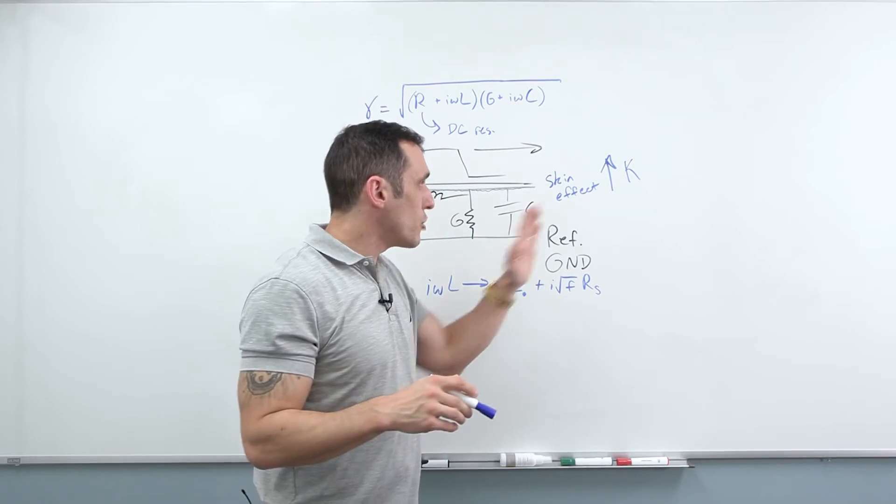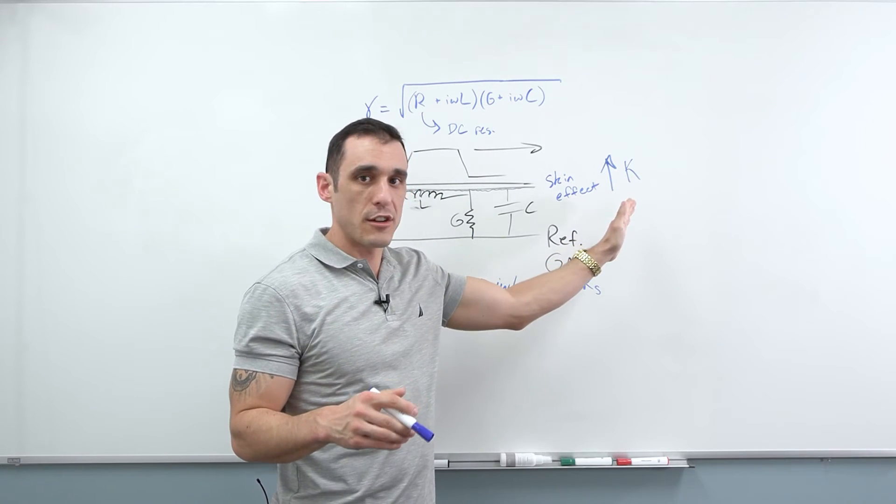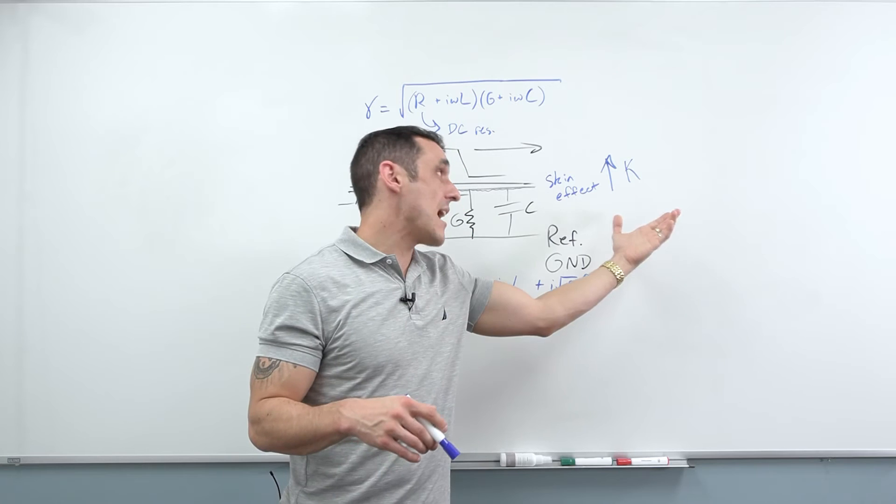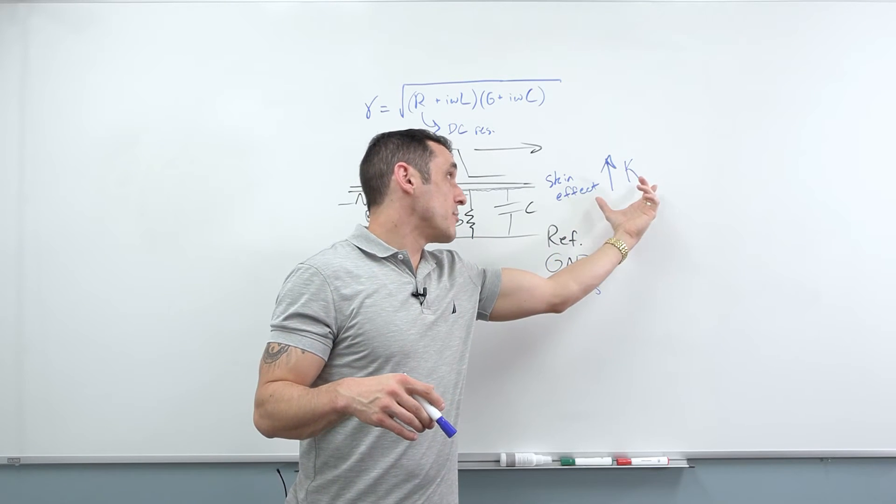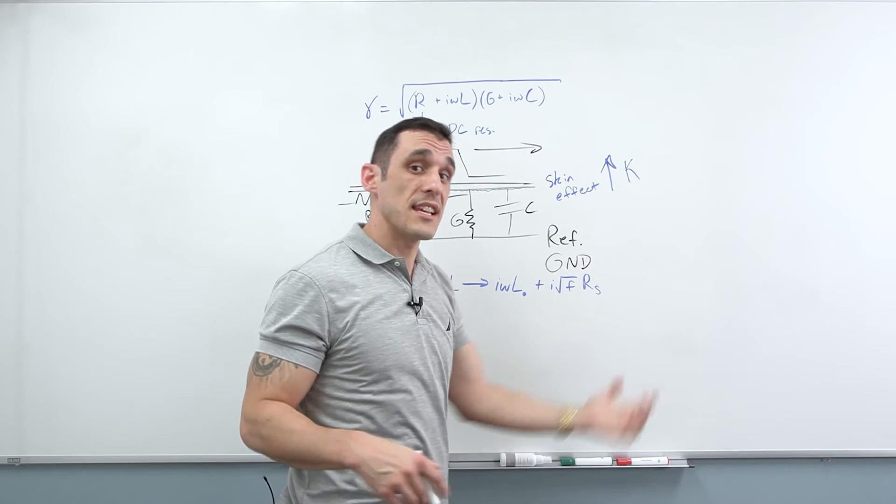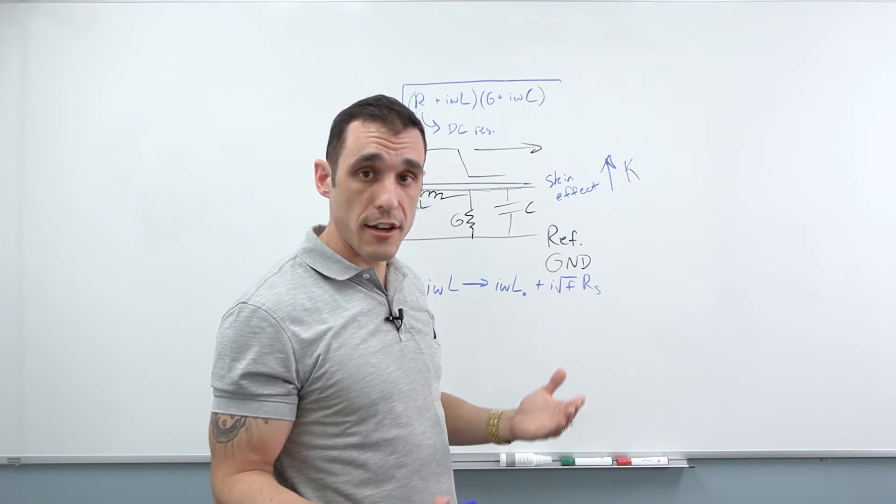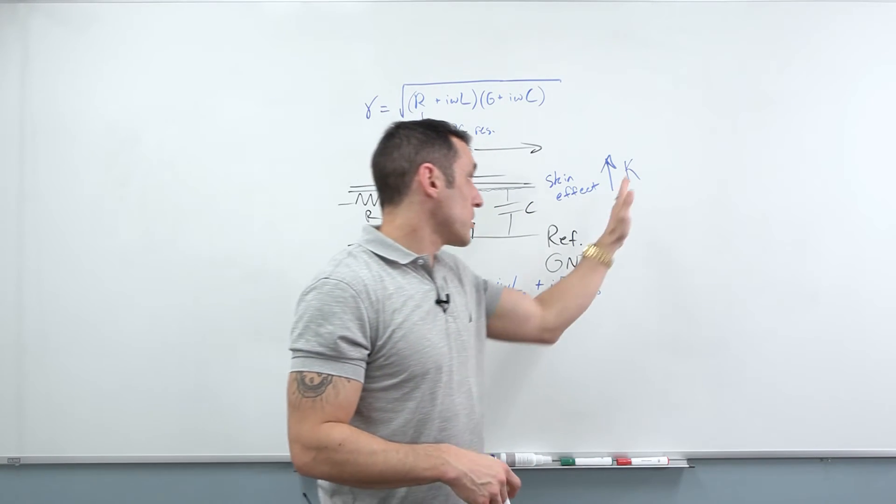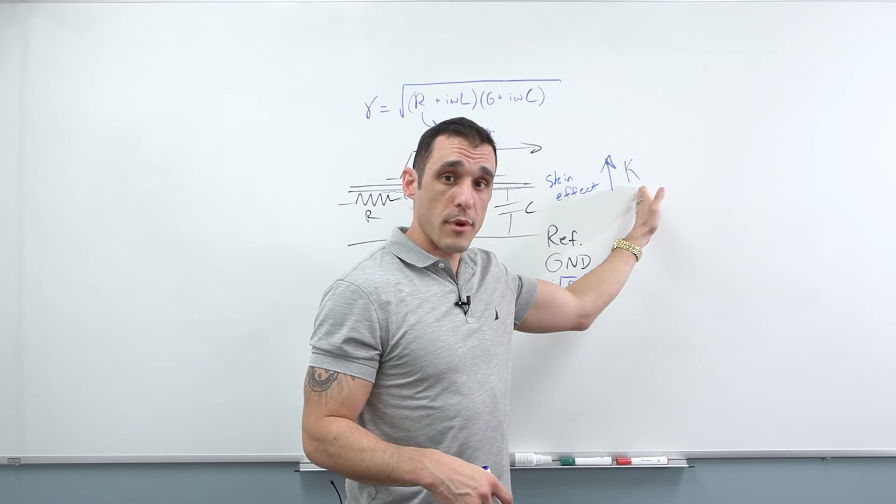Your design software should be able to take this into account. Now, not all design software applications can do this. Altium Designer does have the ability to consider copper roughness in the layer stack. So when you're inside the layer stack manager and you're doing your impedance calculation, you can actually set a value for the copper roughness factor.